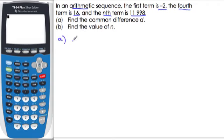Since you know that the first term is negative 2, and then you don't know the second term, you don't know the third term, and the fourth term is 16, you can think about that logically that we are adding d once, twice, three times.